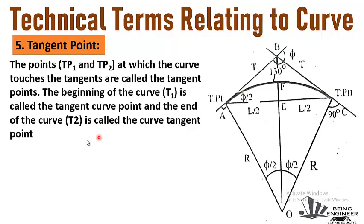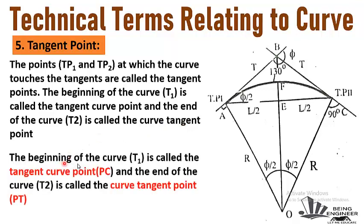The beginning of the curve is represented as PC (point of curvature), and the end of the curve, point T2, is called the curve tangent point and is represented as PT. You can represent tangent points as TP1 or TP2, or also as PC for the point of curvature, or PT for the point of tangency. There are different notations to represent tangent points.